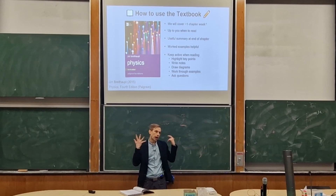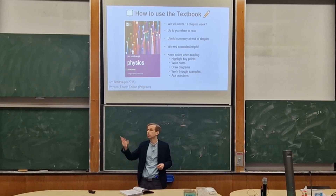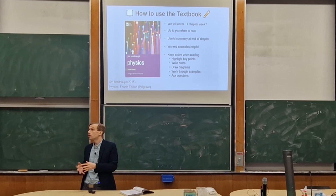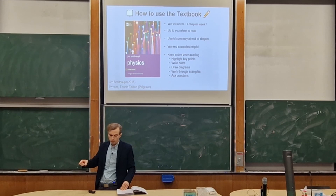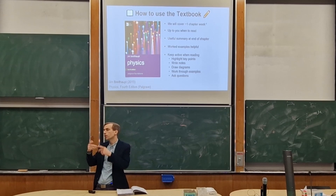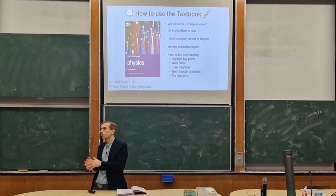Does anyone have any questions about the module information? So — does the textbook have to be the fourth edition? It certainly doesn't. In the library they mostly have the third edition, that's going to work just fine. The one thing to note is that when we have questions in the workshop, the numbers are for the fourth edition, so we might need to check which questions to do if you've got an earlier edition. But physics doesn't change much between editions, so an older edition will work just fine.